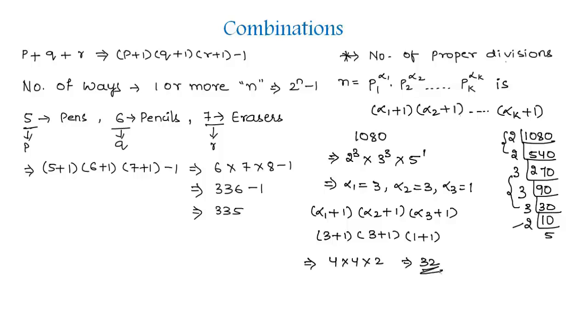So there are 32 ways — that is, 32 positive divisors of the number 1080. Learn these formulas well, as they are important for solving such examples.